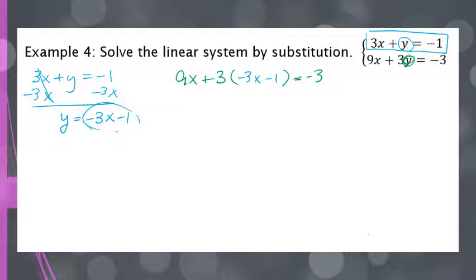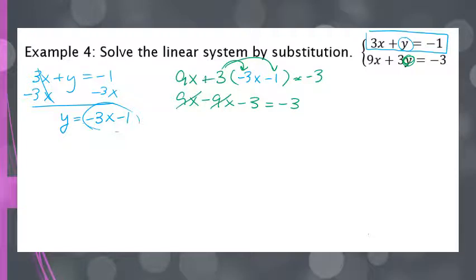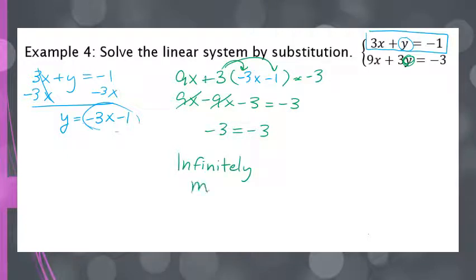I have to distribute the 3, giving me 9x minus 9x minus 3 equals negative 3. These 9x's cancel each other out, and all I have left is negative 3 equals negative 3. This is true — negative 3 equals negative 3 every time. This means there aren't any x values that wouldn't make this equation work, so we have infinitely many solutions, meaning the lines are actually the same line and cross at every possible point.